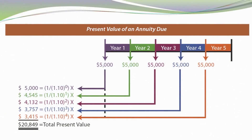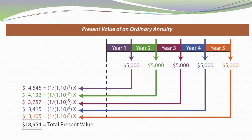Here's how we calculate present value for an annuity. A stream of $5,000 payments received at the beginning of years one through five — discounting back by the appropriate formulas gives us the present value of an annuity due. If we move the payments to the end of each period, that's the present value of an ordinary annuity, which has a slightly lower present value of $18,954.